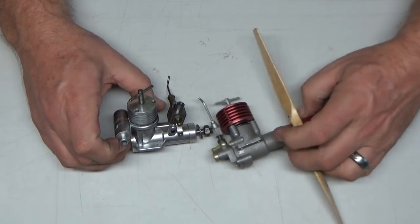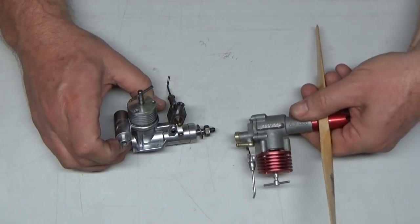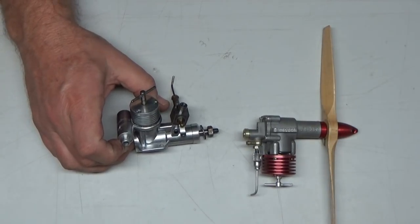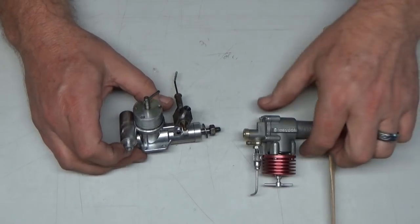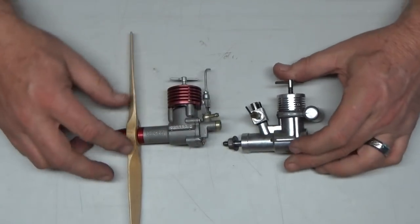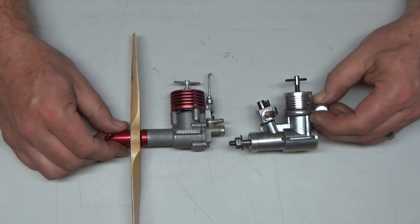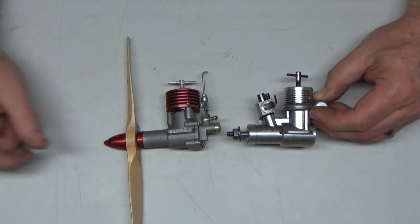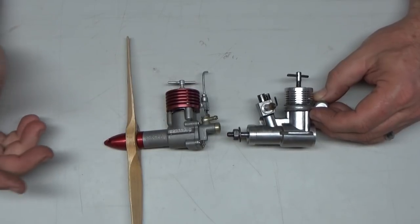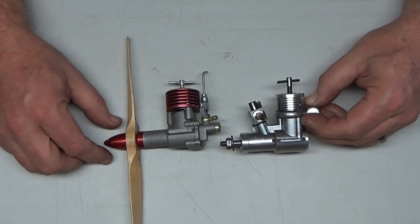The thing that's cool about this engine is it's basically the same displacement as this one, the Mk17. I believe this is also a 1.49, let's see here, a 1.5 cc engine. In addition to the Mk17, now I have a real compression ignition engine, I guess I should say.